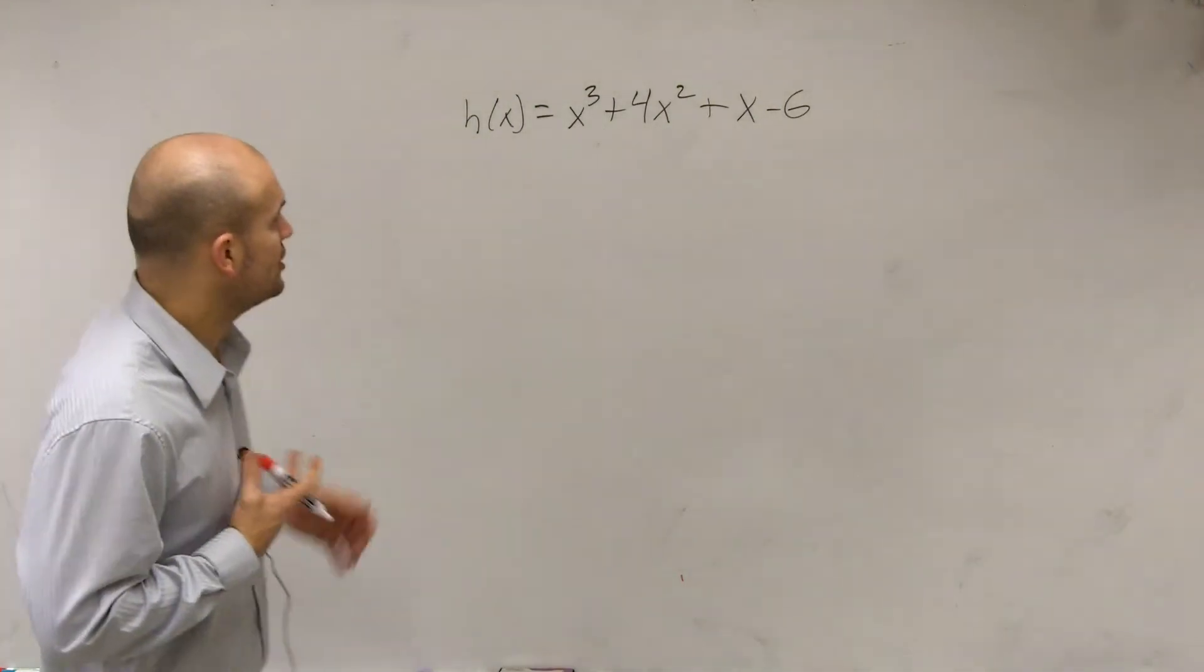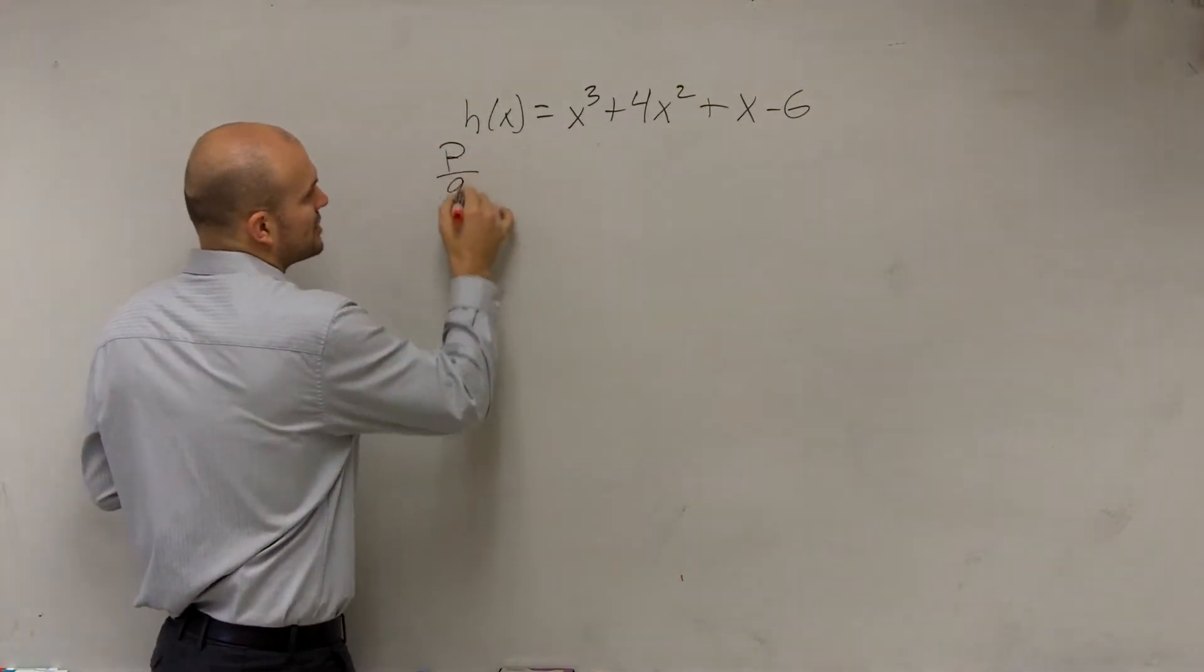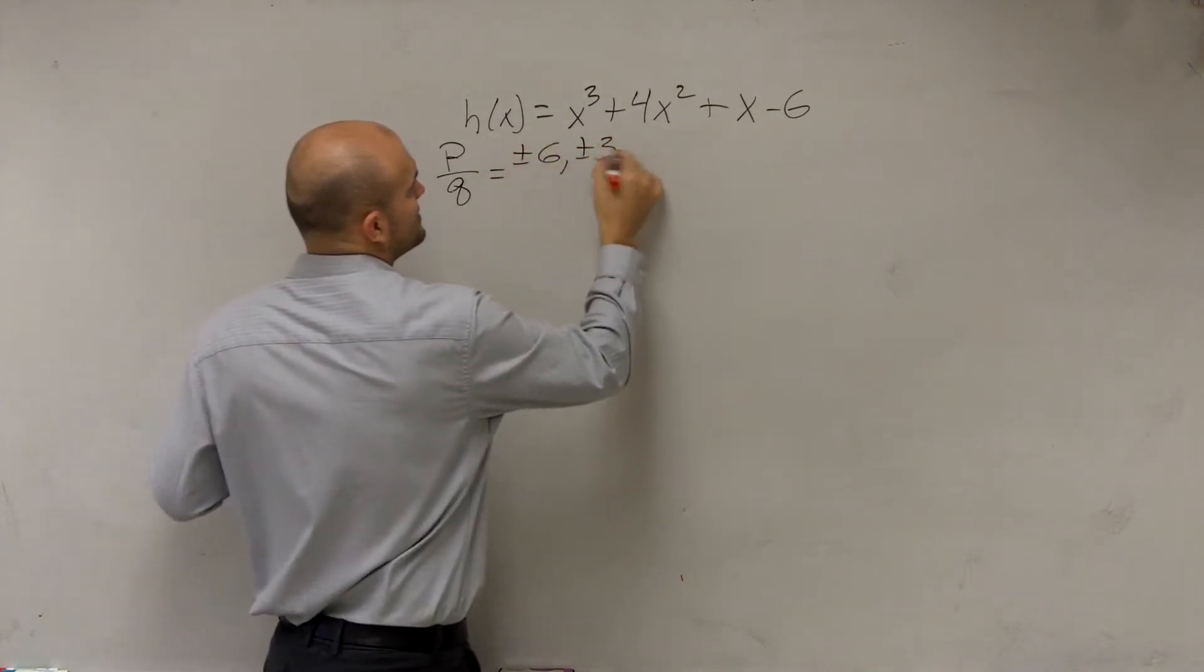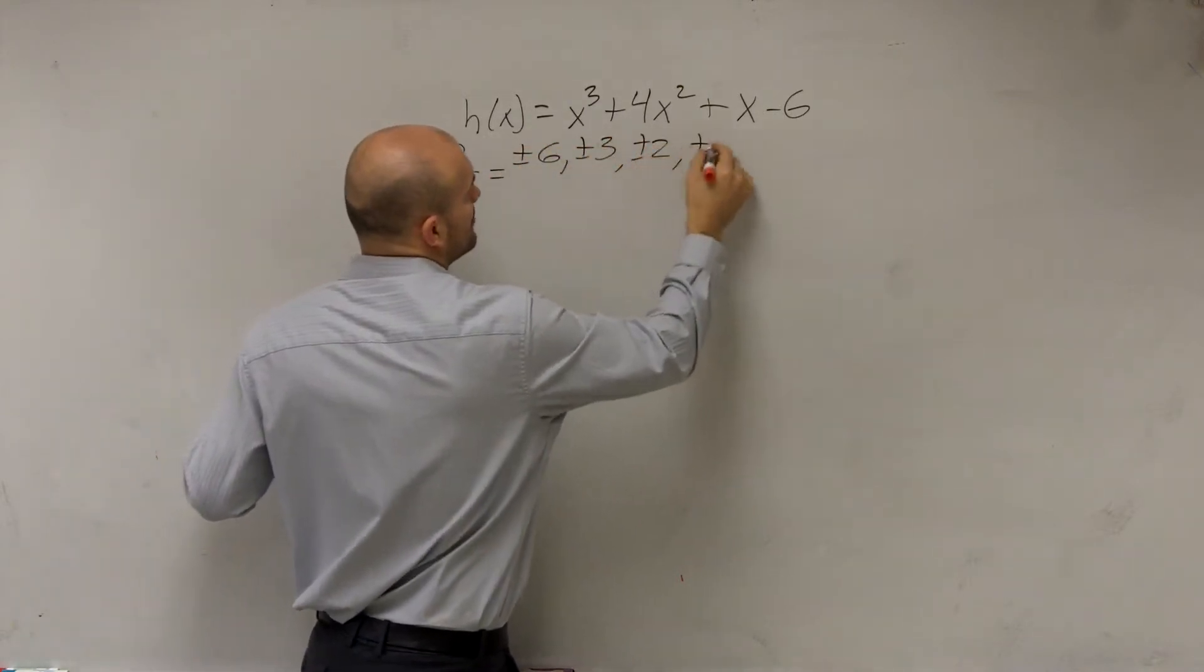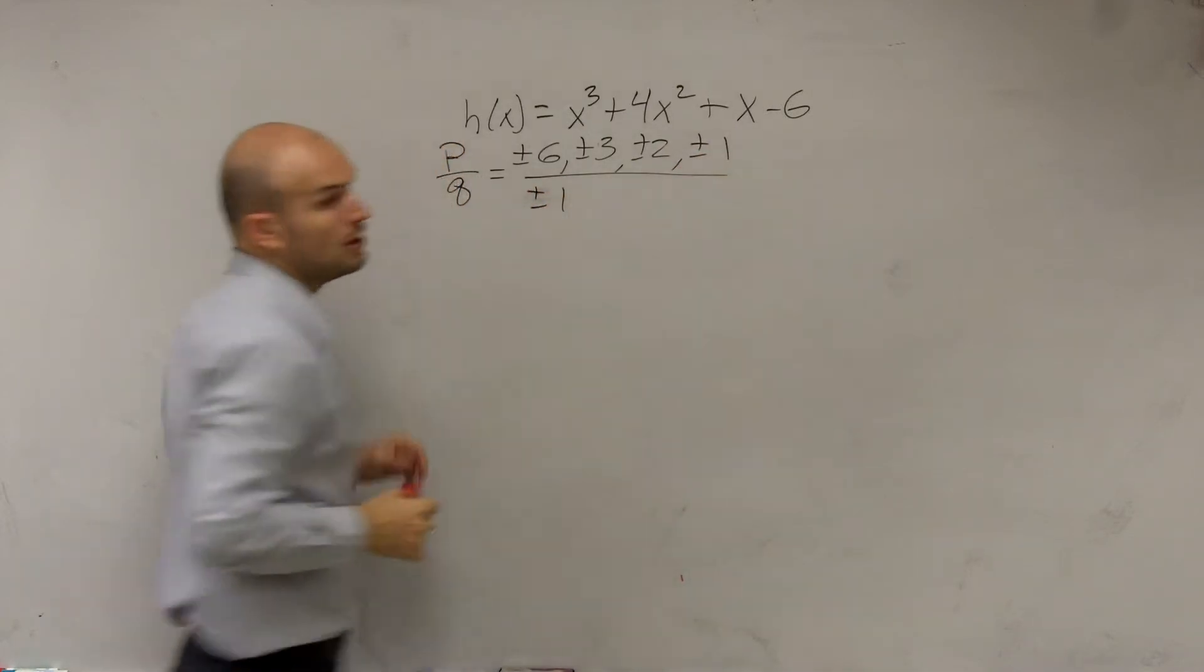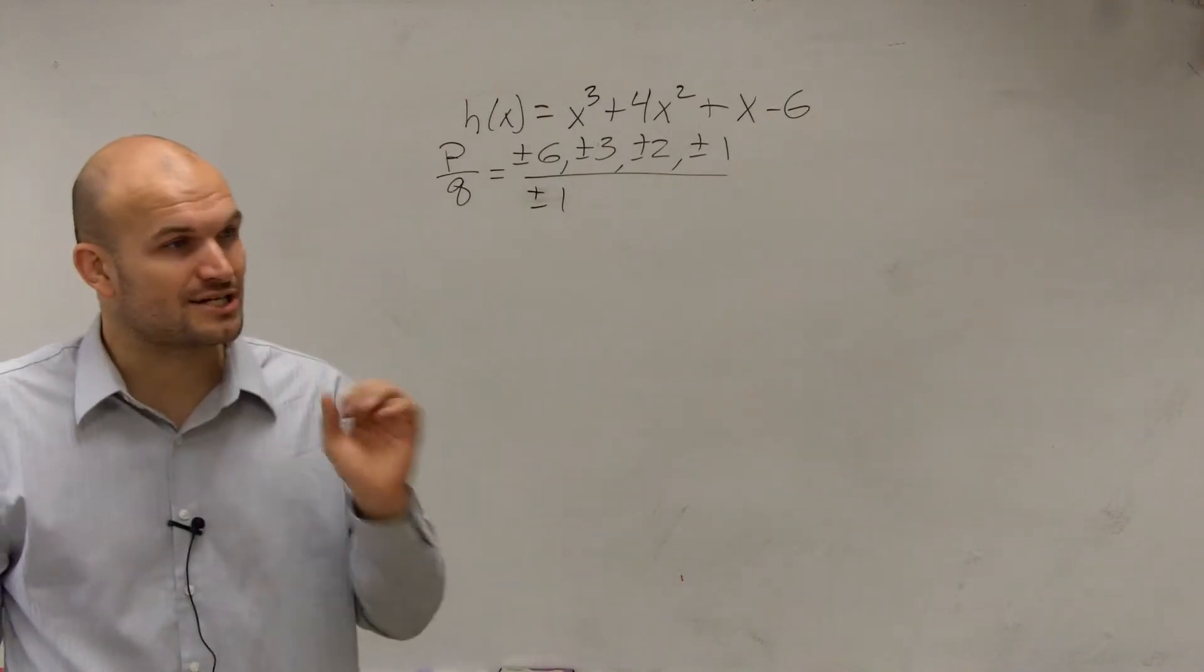So when we're looking at this, if I want to find all the possible rational zeros, I can take p over q, which would be plus or minus 6, plus or minus 3, plus or minus 2, plus or minus 1, all over plus or minus 1. Those are all my possible rational zeros.